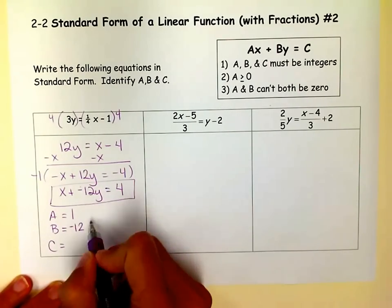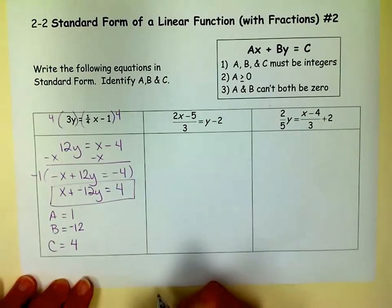And the other ones are pretty easy. y, whatever's in front of y, it's negative 12. And then the constant. So those are my A, B, and C.